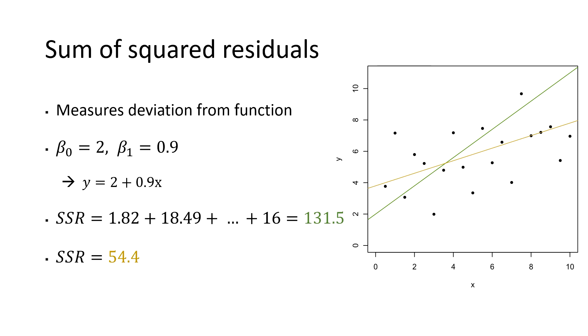We could now even go further and ask ourselves which function leads to the smallest possible value. Luckily there are mathematical tools to answer this question. If we apply them, we obtain the blue function and a value of 52.3 for the sum of squared residuals.